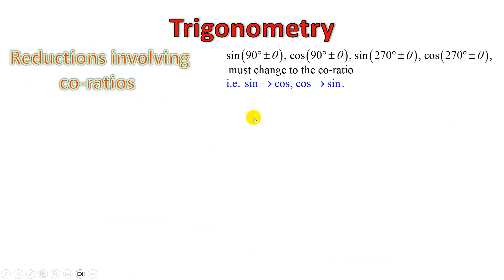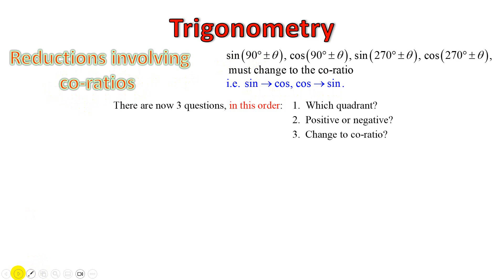We can also reference the reduction formula involving co-ratios: 90 plus or minus theta, cos of 90 plus or minus theta, sine of 90 plus or minus theta, together with cos of 270 plus or minus theta. When we use co-ratios, we are talking about complementary ratios. The complement of sine is cos, and the complement of cos is sine. Three questions to ask: which quadrant, is it positive or negative in that quadrant, and if it is a co-ratio like 90 plus or minus, it changes to the complementary ratio.